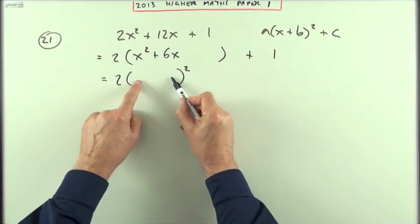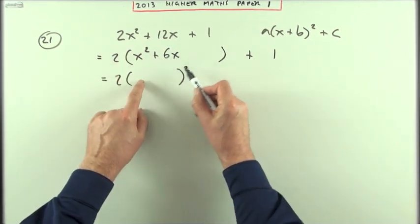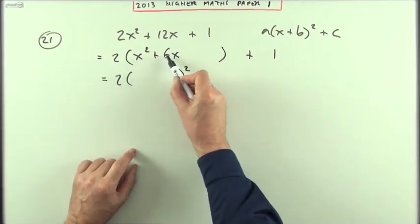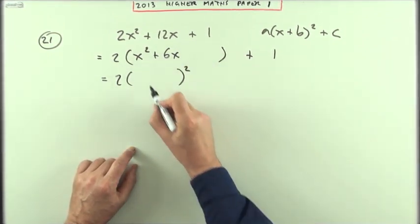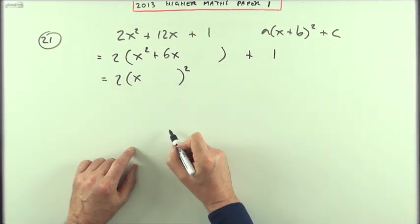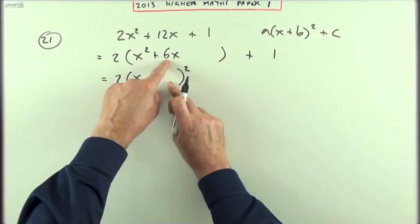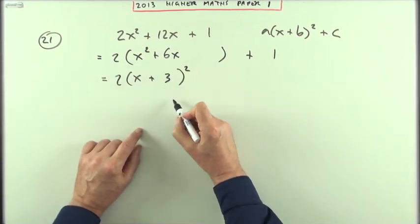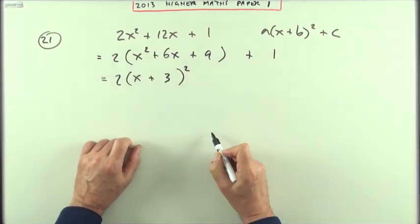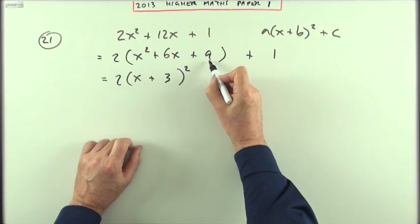Because I know the pattern for the square is square the first, square the last, and twice the product. Only two out of the five bits to finish off that pattern. If that's x squared, that must have been x. And if that's an x, then the two of these together must give half of this, so it must be half of that - that's three. Square the last, that must be a plus nine.